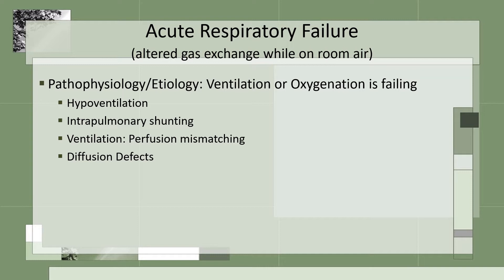The next reason would be ventilation-perfusion mismatching, where the rate of ventilation is not equaling the rate of perfusion. This can be caused by secretions, which cause the rate of ventilation to be less than the rate of perfusion, or a pulmonary embolism, which causes ventilation to be greater than perfusion. The last reason is diffusion defects — the distance between the alveoli and the capillary membrane is increasing because of fluid buildup, and cardiac output decreases. The O2 supply to the cells is not meeting demand, which occurs with lactic acidosis or when hemoglobin is low.